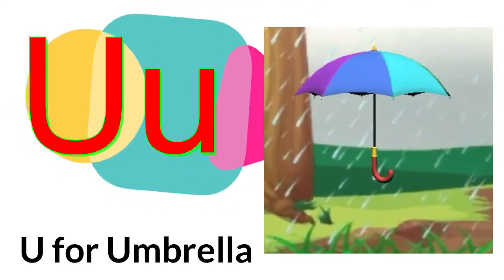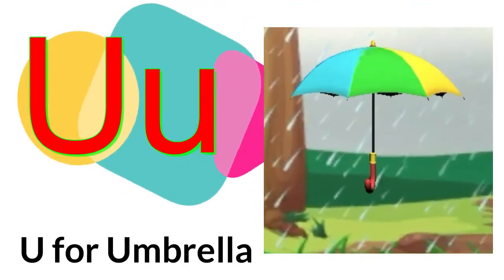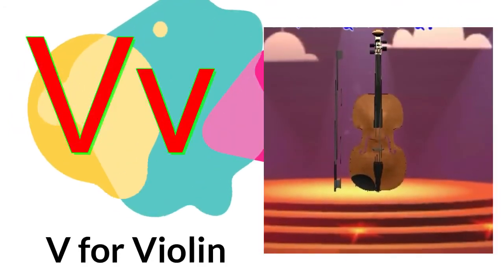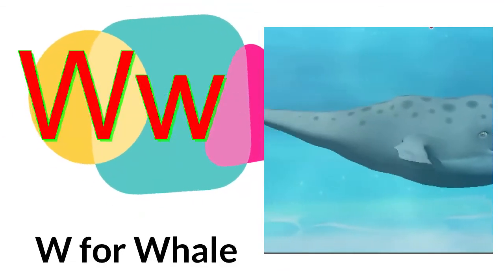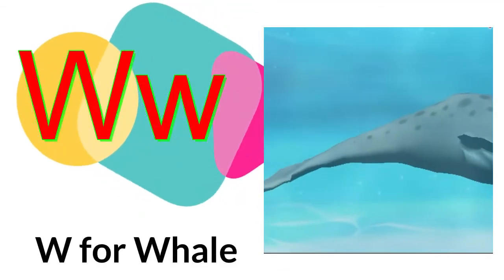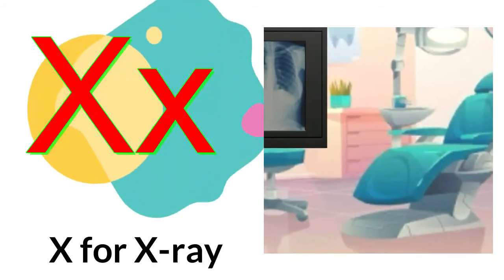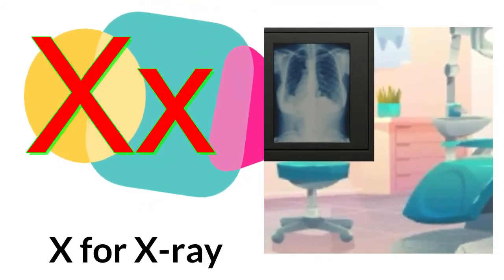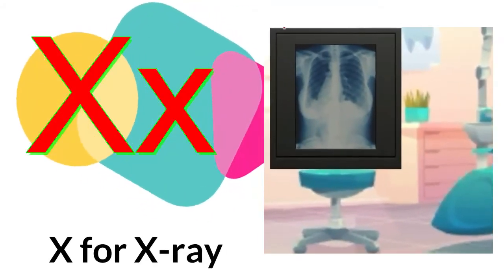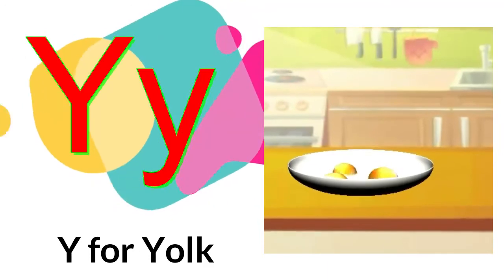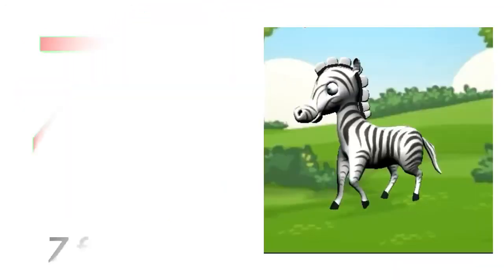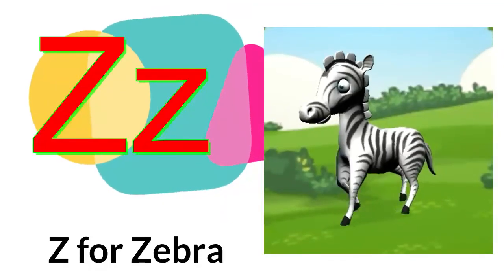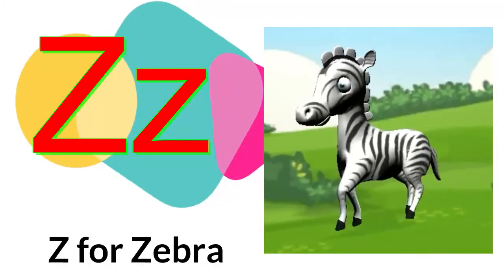U. U for umbrella. V. V for violin. W. W for wolf. X. X for x-ray. Y. Y for yak. Z. Z for zebra.